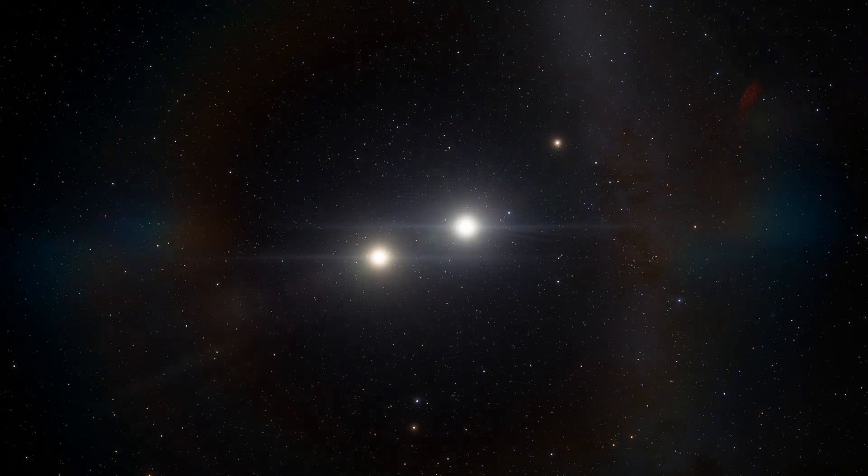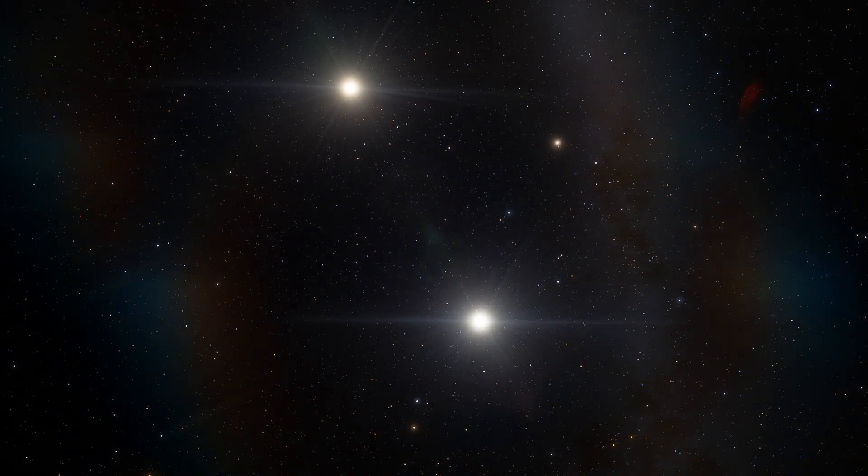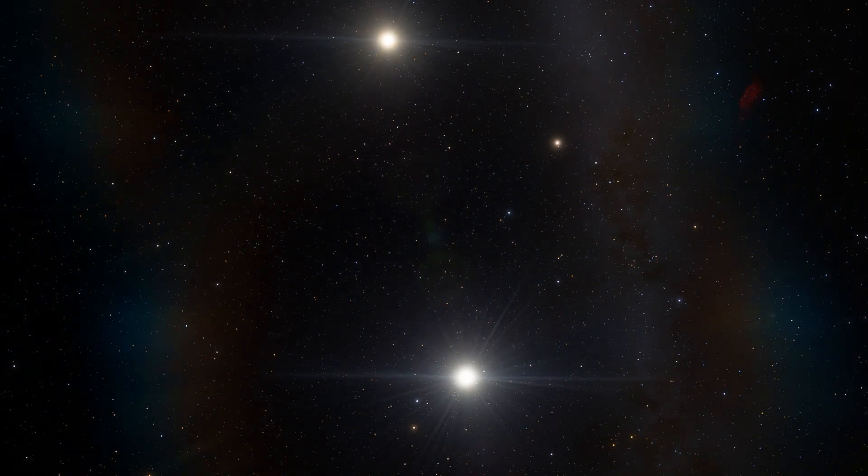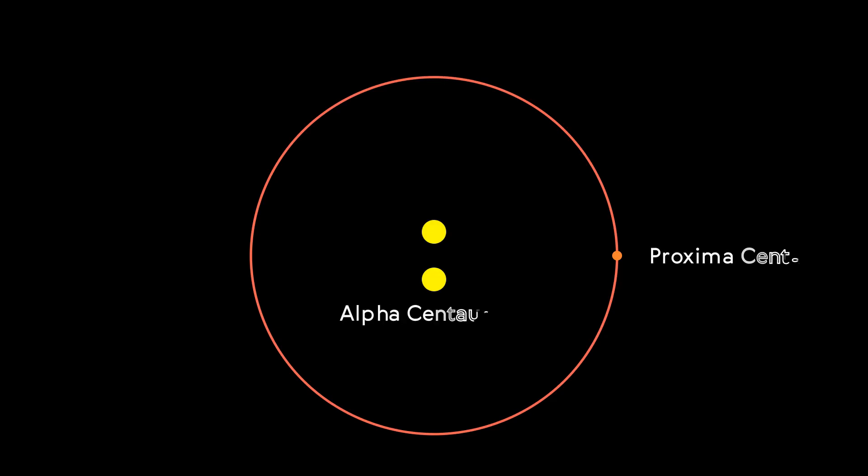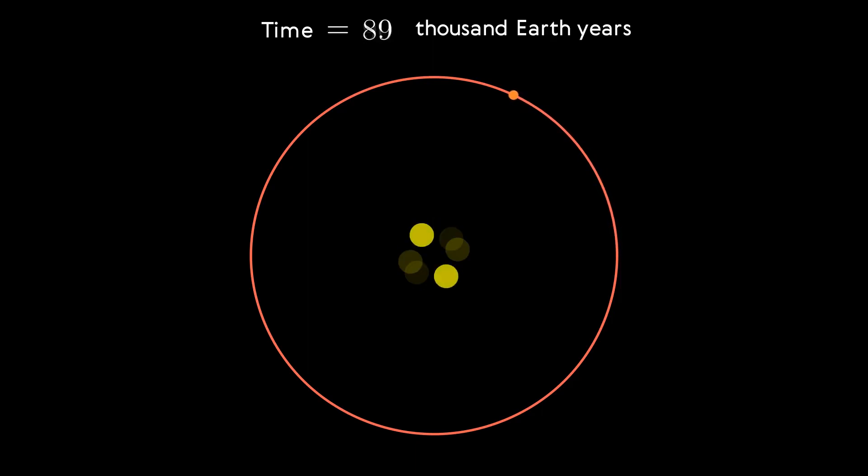Both Alpha Centauri stars rotate around a common center of mass in an elliptical orbit with an orbital period of about 80 years. The kinematic characteristics of Proxima Centauri differ from those of the main stars of the system. Proxima Centauri is located approximately 15,000 astronomical units from the two central stars of the system. The period of Proxima's revolution around Alpha Centauri AB is about 500,000 years.